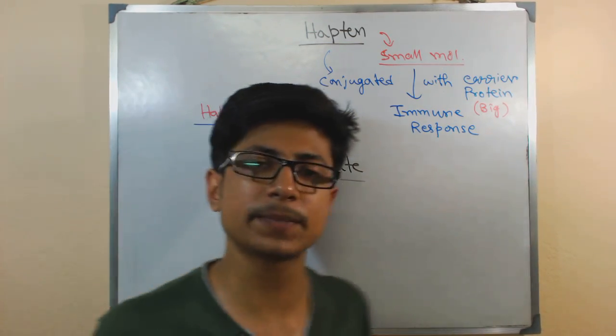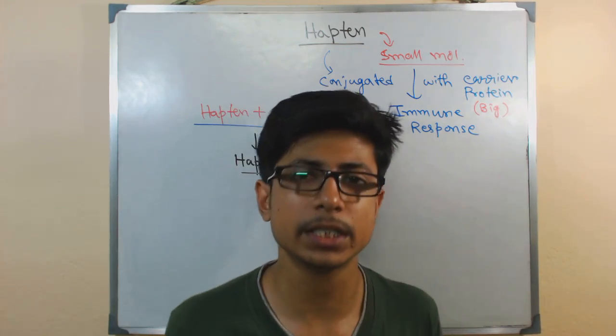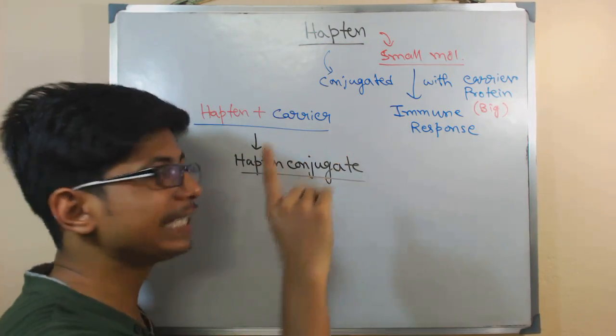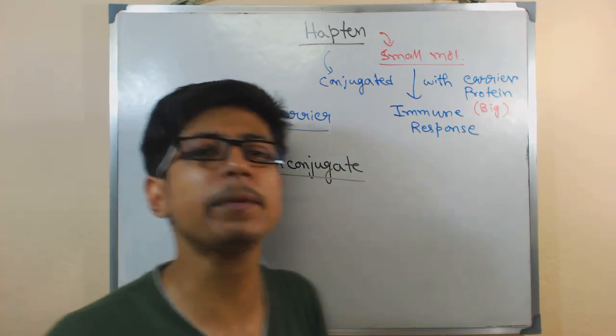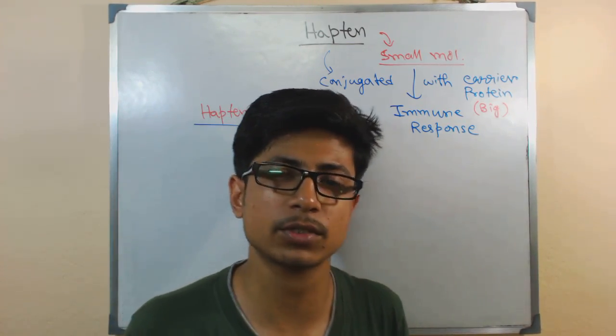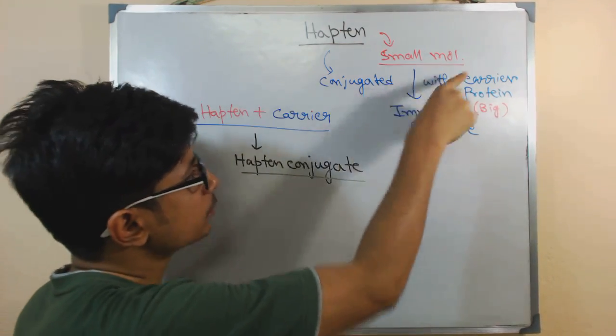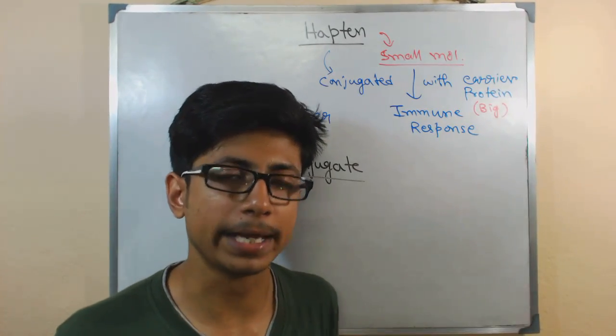So usually if hapten is present in your body, very small, it is not enough to trigger the immune response. Though hapten is found to be interacting with antibodies. If hapten is present, antibody can bind with hapten but the signaling association is not very strong. But on the other hand, if hapten is attached with this carrier and then antibody binds with it, the signaling is much more high.